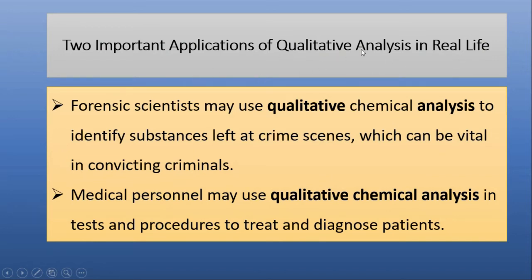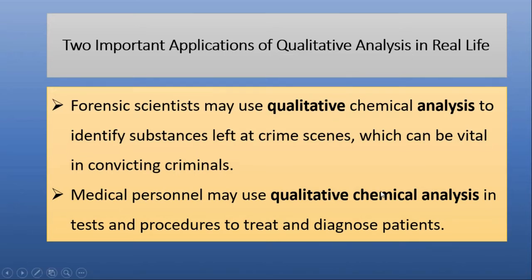There are several applications of qualitative analysis, but two important ones are: first, forensic scientists use qualitative chemical analysis to identify substances left at a crime scene, which can be important in finding the guilty person — DNA tests and other such tests are also examples of qualitative analysis. Second, medical personnel use qualitative analysis in tests and procedures to treat and diagnose patients — when we drop a blood sample or urine sample to a medical lab to find out what disease we have, that is also a result of qualitative analysis.